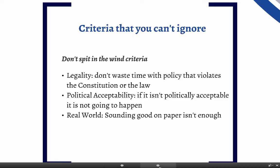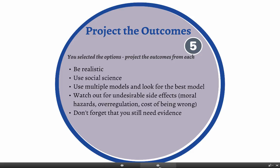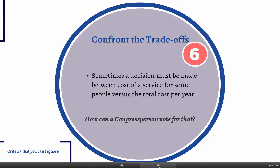Once you have your favorite policy alternatives, you want to project the outcomes. Project the outcomes for each option selected. You need to be realistic and ideally use social science — use multiple models and look for the best ones. There is not just one way to look at a problem. Theory teaches you how to conceptualize problems, and if you look at a problem from different perspectives, you're more likely to see things that could cause you to fail that you may not have predicted. Don't forget that you still need evidence.